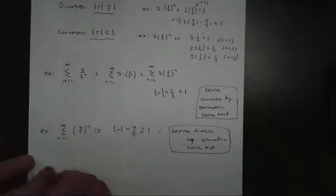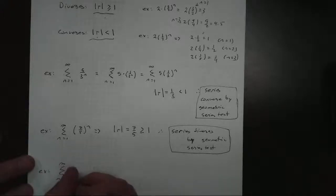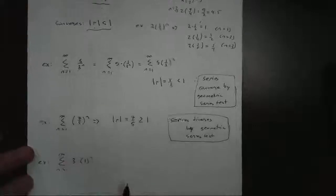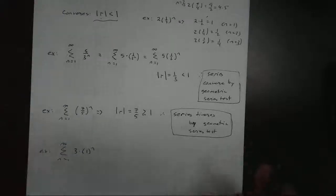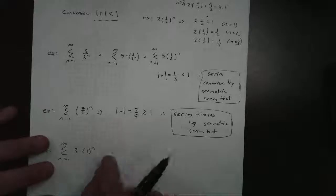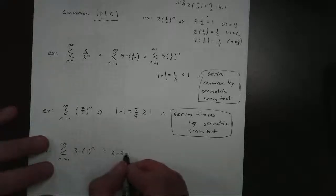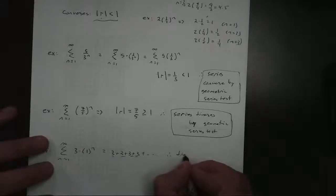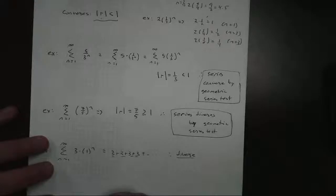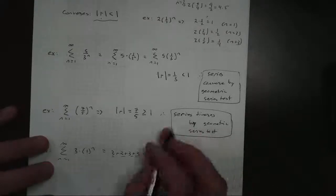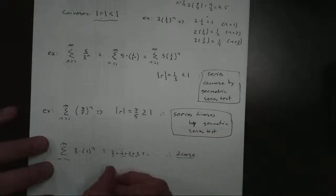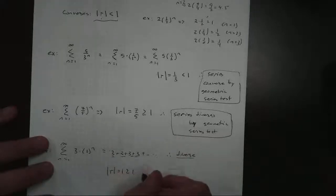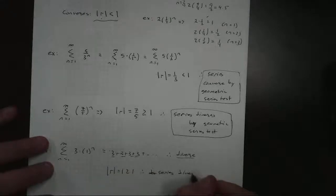What if r equals 1? For example, 3 times 1^n. Think about it — this is like saying 3 + 3 + 3 + 3..., adding 3 an infinite number of times. Therefore, this diverges; it doesn't go to any finite number, it goes to infinity. Since r = 1, which is greater than or equal to 1, the series diverges by the geometric series test.